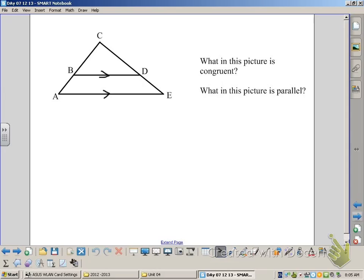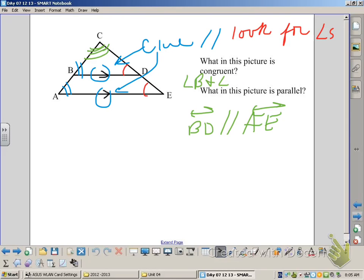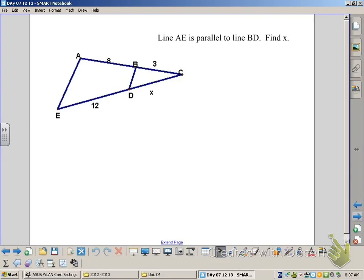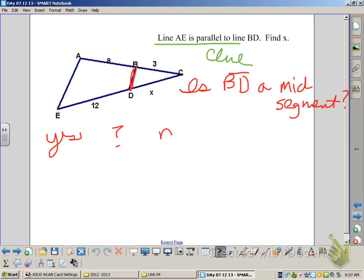So in this problem, we want to know what in this picture will be congruent. We know we have parallel lines, so we know we have congruent angles. In this picture, it's sort of like what we were working yesterday, except for one thing. Is BD a mid-segment? Let's take a look at our clues.